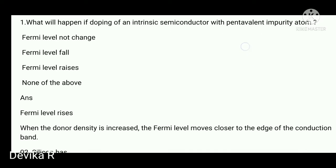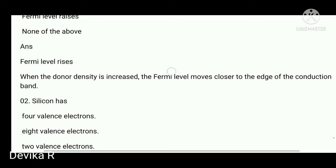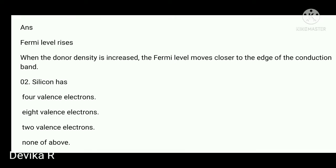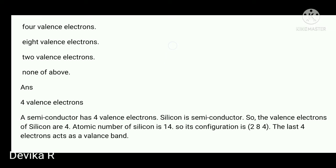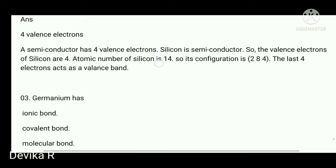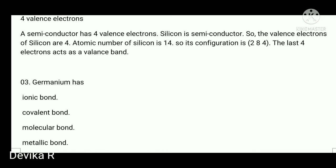Next question: silicon has how many valence electrons? We already know silicon and germanium have four valence electrons. Next question: germanium has which bond — ionic, covalent, molecular, or metallic?